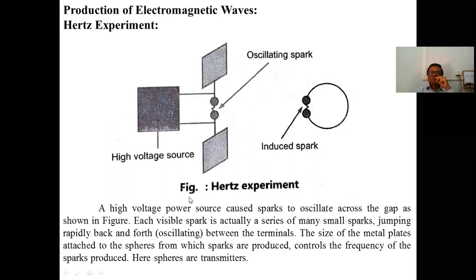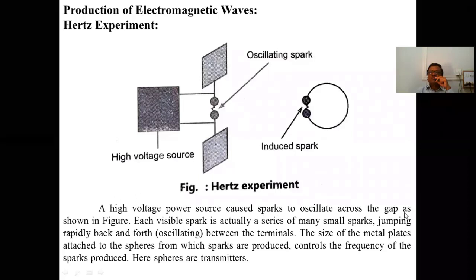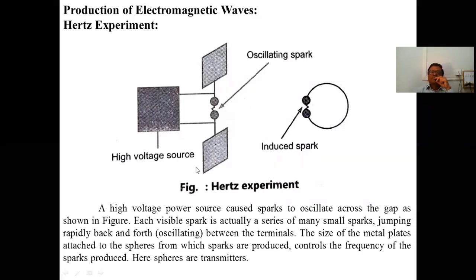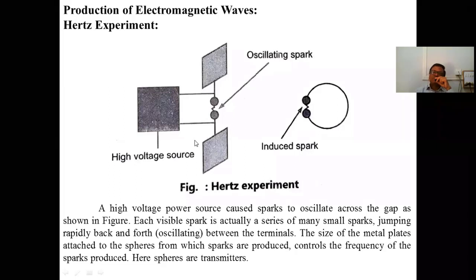A high voltage power source causes a spark to oscillate across the gap, as shown in the figure. Each visible spark is actually a series of many small sparks jumping rapidly back and forth between the terminals. The size of the metal plates attached to the sparks controls the frequency of the sparks — that is, the frequency of the electromagnetic waves produced. This part of the setup is called the transmitter; it transmits the electromagnetic wave.